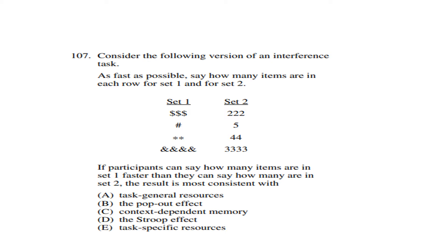Question 107: Consider the following version of an interference task — as fast as possible, say how many items are there in each row for Set 1 and Set 2. In Set 1 there are different signs, and in Set 2 there are different numbers. If participants can identify how many items are in Set 1 faster than they can for Set 2, the result is most consistent with the Stroop effect.